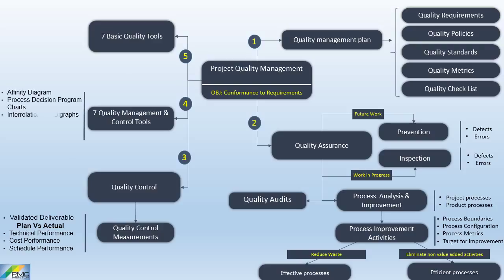The fourth key concept is the seven quality management and control tools, primarily used in quality assurance to improve processes. Affinity diagram is a group creativity technique that allows a large number of ideas to be classified into groups for review and analysis. Process decision program charts is used to understand the goal in relation to the steps for getting to the goal. Interrelationship digraphs provides a process for creative problem solving in moderately complex scenarios. The tree diagram shows a decomposition hierarchy to visualize parent-to-child relationships.